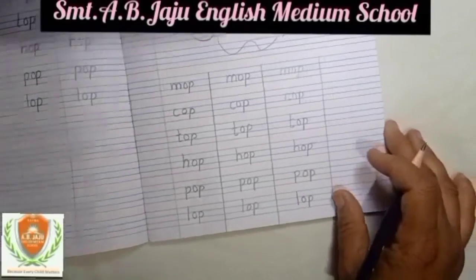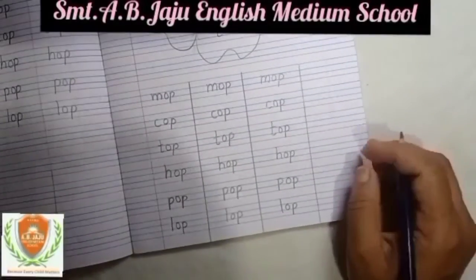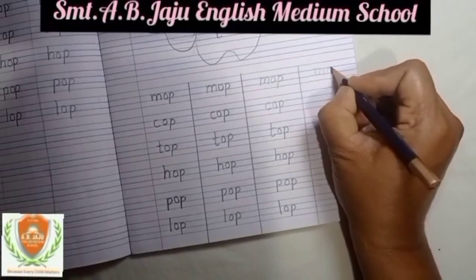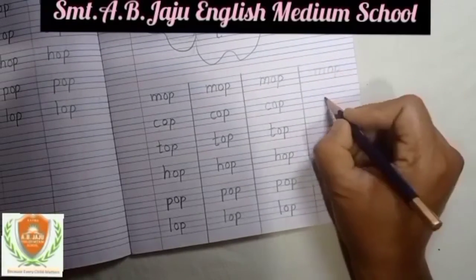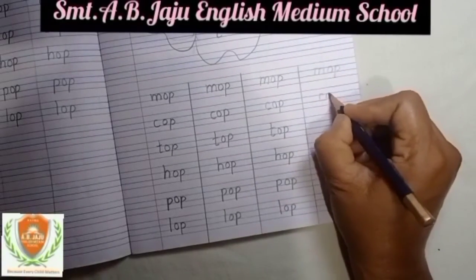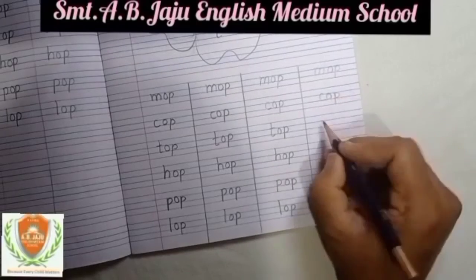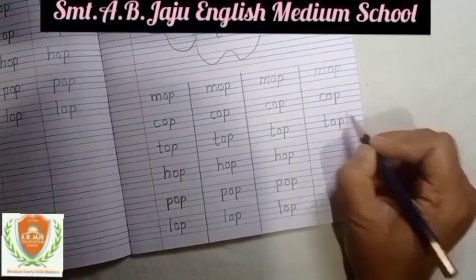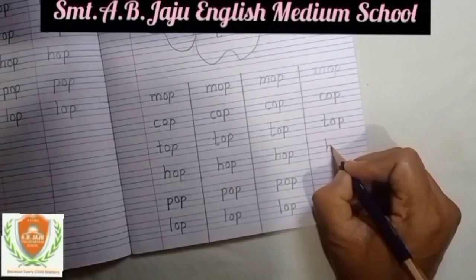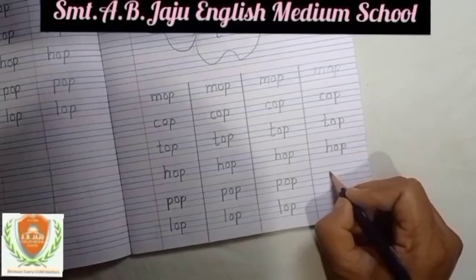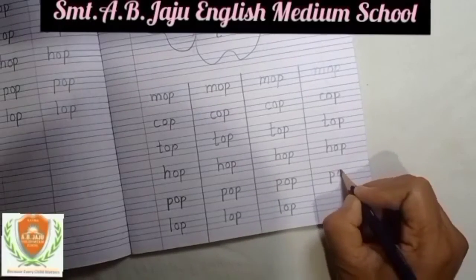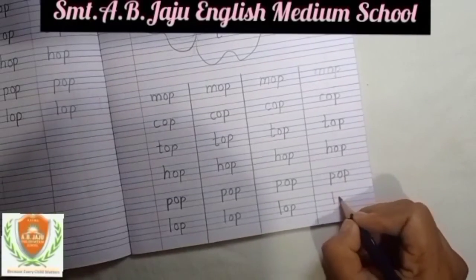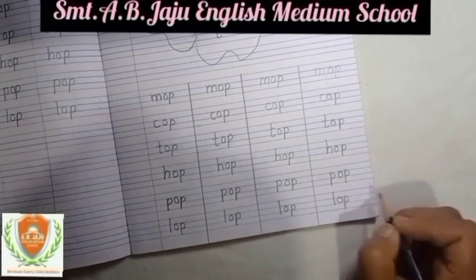So these are three letter words. Again last one — M-O-P, mop. C-O-P, cop. T-O-P, top. H-O-P, hop. P-O-P, pop. L-O-P, lop.